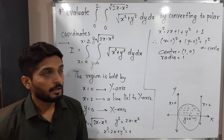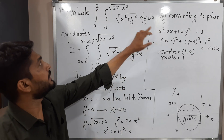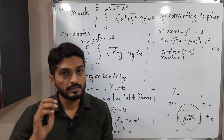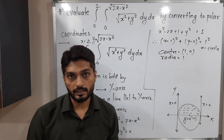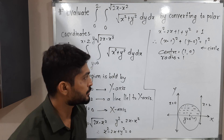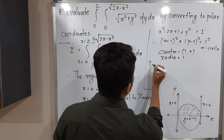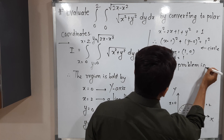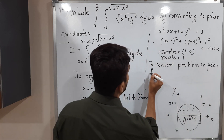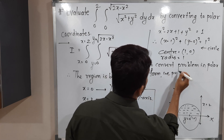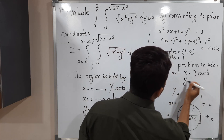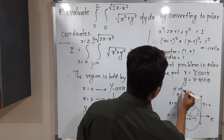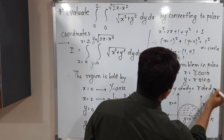To convert the problem to polar form, we use the standard substitution: x = r cosθ, y = r sinθ, and dx dy = r dr dθ. We will use this substitution to convert all given equations to polar form, then determine the limits and proceed with integration.